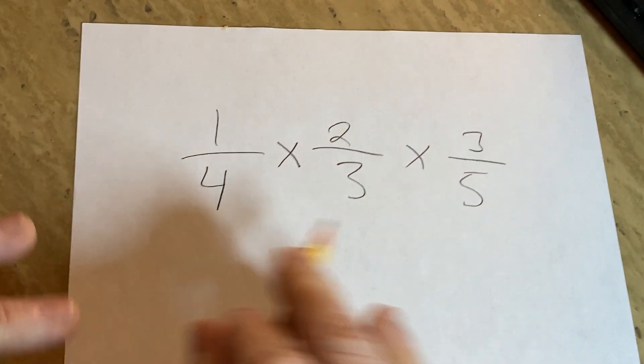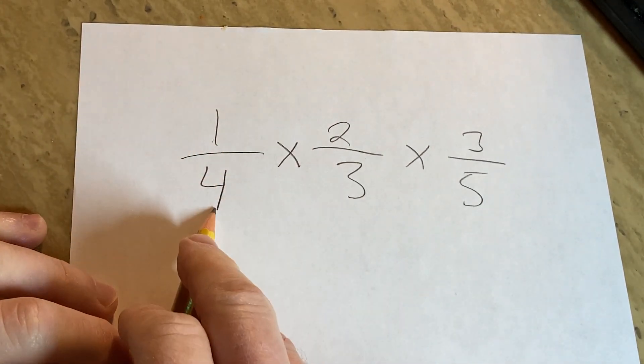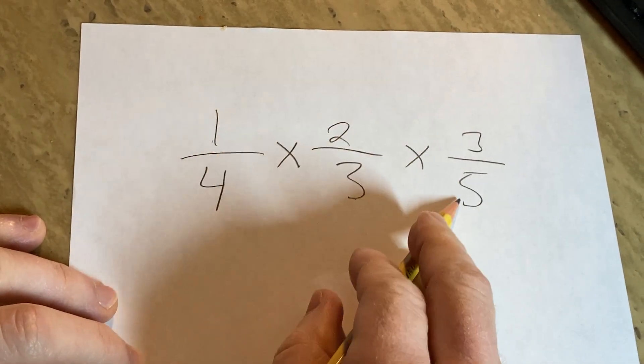In this video, we're going to multiply three fractions. So we have 1 over 4 times 2 over 3 times 3 over 5.